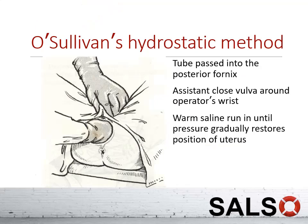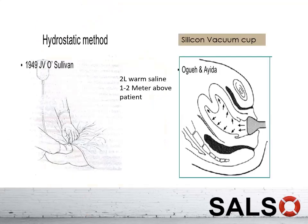Another method is O'Sullivan's hydrostatic method, in which a tube is passed into the posterior fornix, the vulva is sealed, and warm saline is run in until the pressure gradually restores the uterus to its normal position. You can use a normal saline drip set or a silicone cup, which provides better sealing at the introitus. The warm saline bag should be hung at least one to two metres above the patient. First, always exclude the possibility of uterine rupture before using this method.